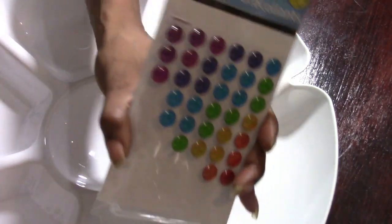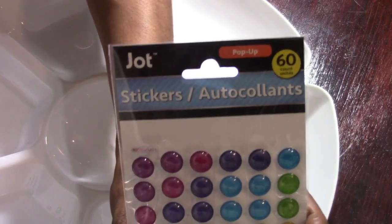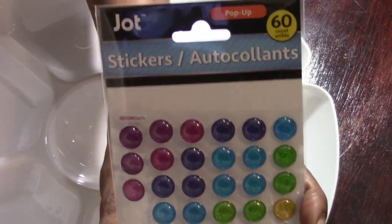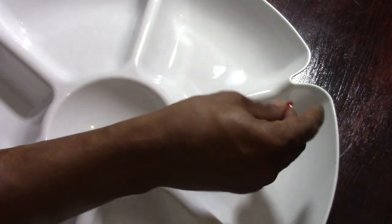And we're going to begin to place our bigger bubble Jot stickers, the 60 count ones. We're going to place them right on the edge, the inside edge where it lifts up. And I'm going to be doing two rows all the way around.